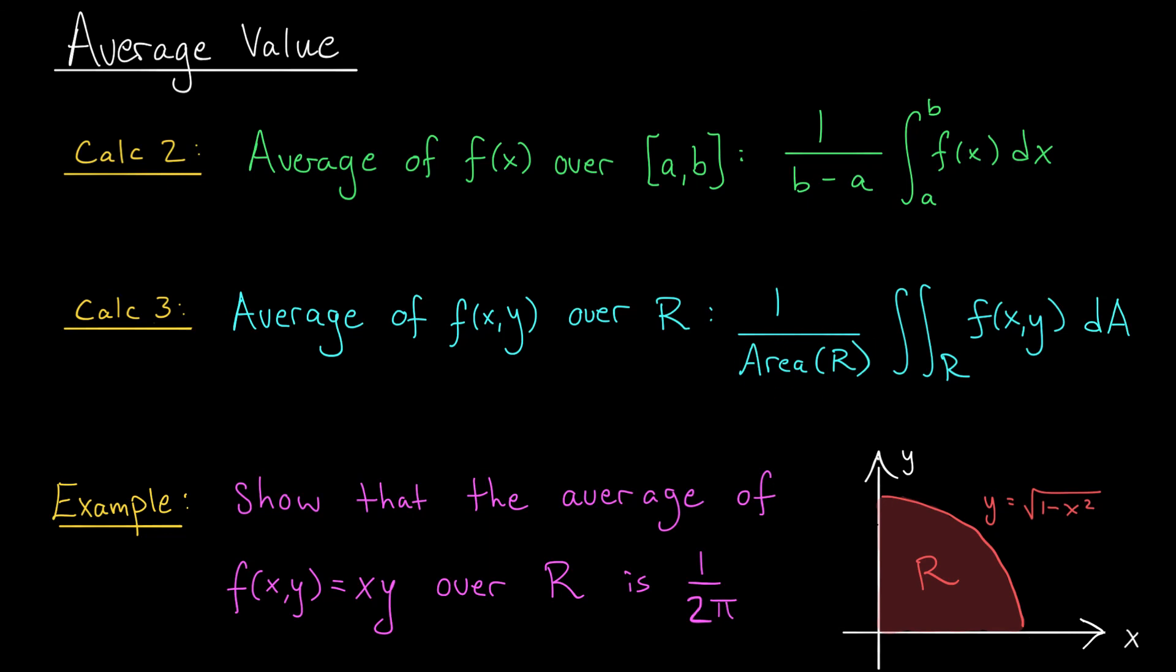As an exercise, I'd like you to put this formula to use to compute the average value of the function f(x,y) equals xy over this quarter unit circle in the first quadrant. You should get an answer of 1 over 2 pi. Give it a shot.